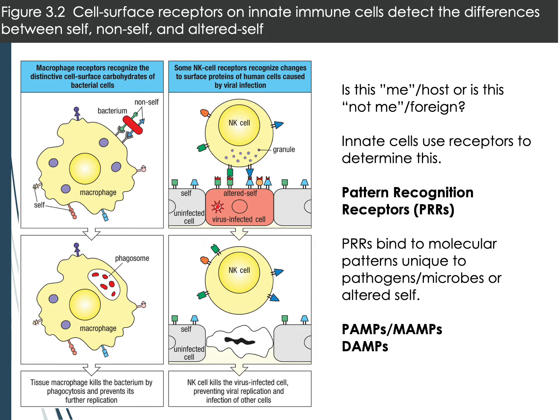A figure shows a macrophage with pattern recognition receptors on its surface binding to bacteria expressing non-self molecules. The macrophage engulfs it through phagocytosis, digests it, and kills the bacteria. It all comes down to: is this me, or is it not me? Self versus non-self.